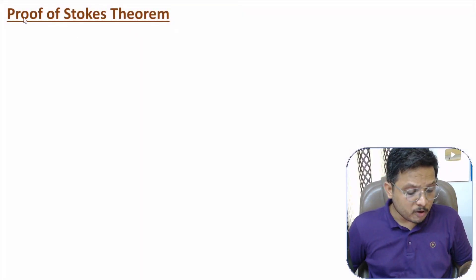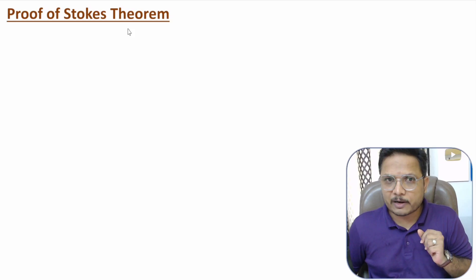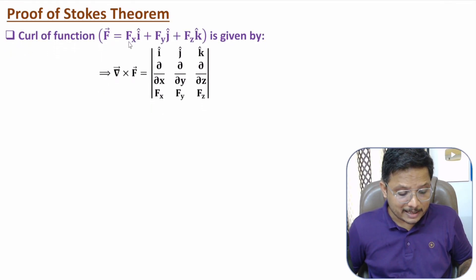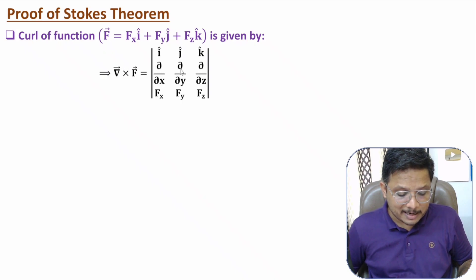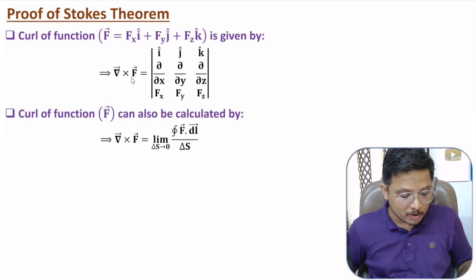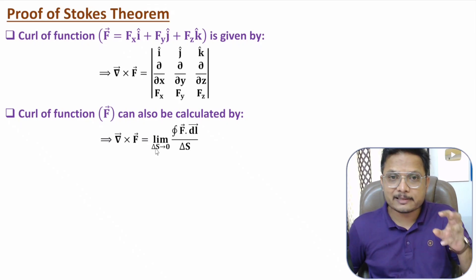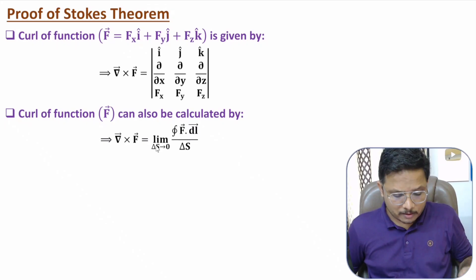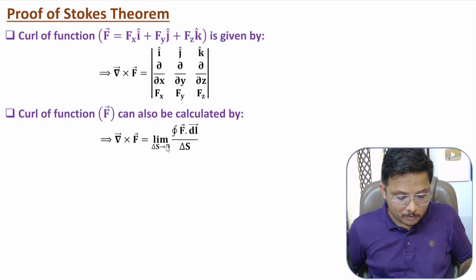Now I'll explain the proof of Stokes Theorem. Stokes Theorem is based on curl of a function. If you have function f given as fx·i + fy·j + fz·k, then curl of function is del cross f, which is the determinant with i, j, k in the first row; del/del x, del/del y, del/del z in the second row; and fx, fy, fz in the third row. By solving this matrix, one can identify curl of function. Curl of function can also be calculated by the limit as delta s tends to zero, where delta s is a small area, and we have the line integration of function divided by delta s.